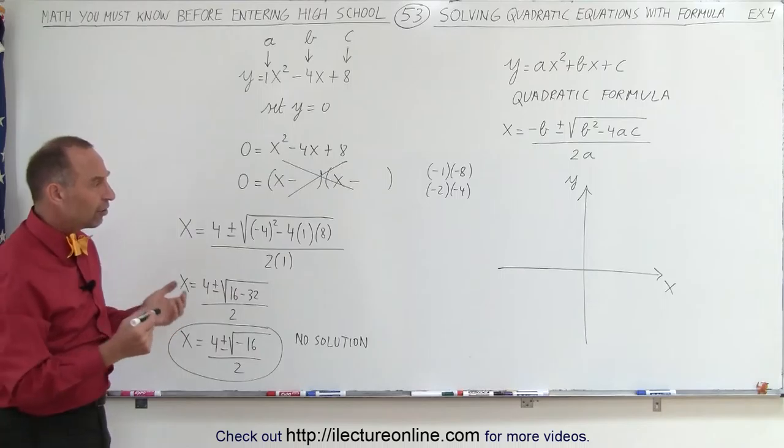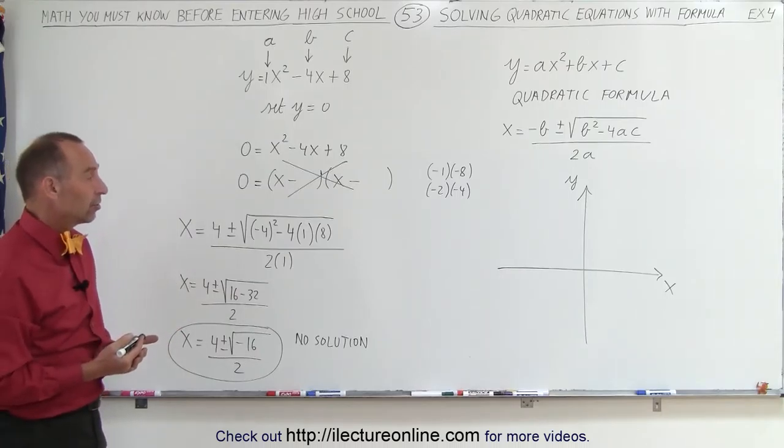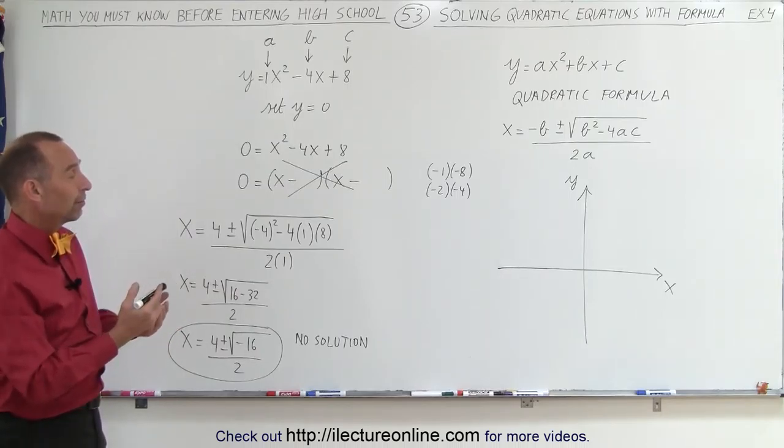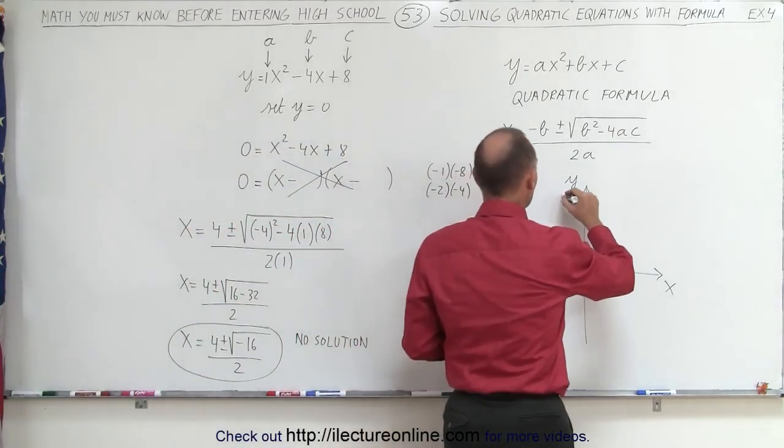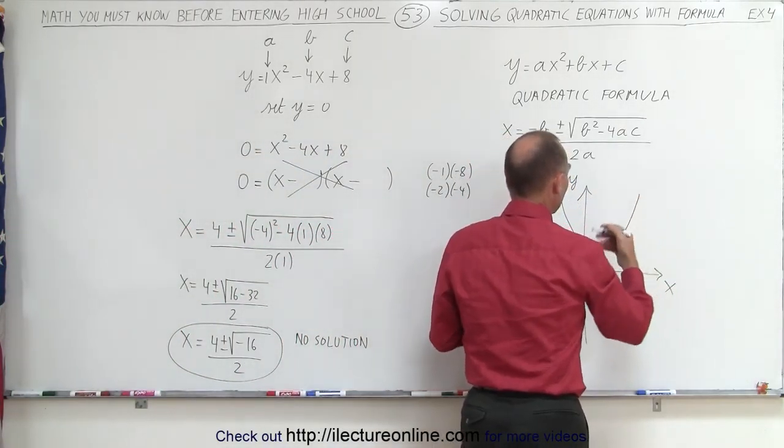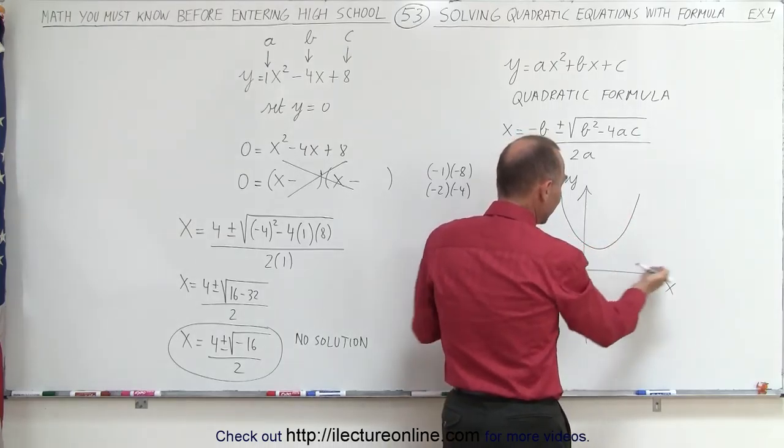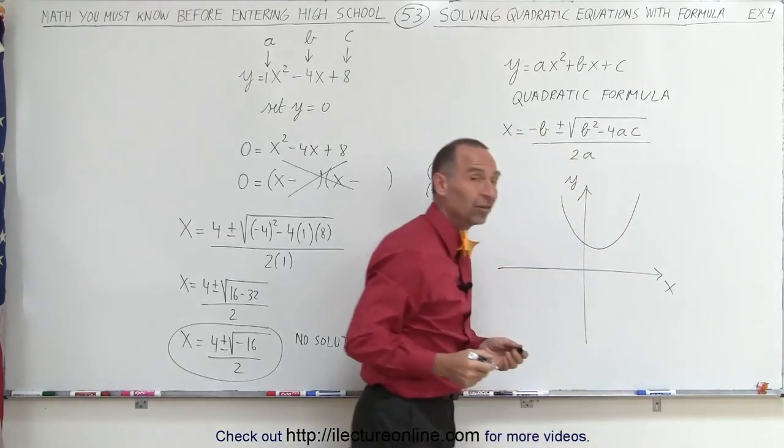In other words, the graph doesn't actually cross the x-axis. The graph probably stays above the x-axis. The solution probably looks something like this, or I should say the graph looks something like this, and the graph never crosses the x-axis.